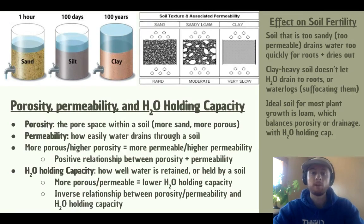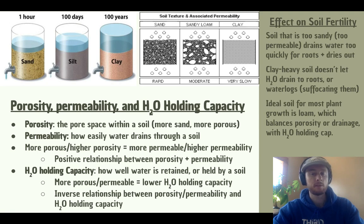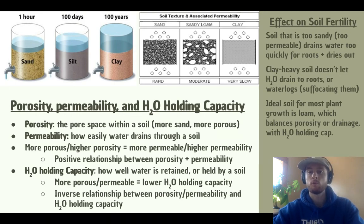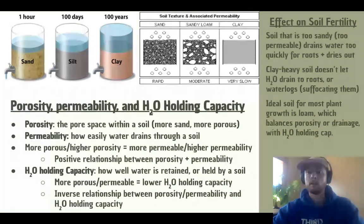What does this mean for plants? Plants need a balance between permeability and water holding capacity. They need some degree of porosity so that oxygen and water can enter the soil and reach their roots. But if the soil is too sandy or too porous, it has really high permeability and water drains straight through before the roots can access it. If the soil is too clay-dominated, then it doesn't drain water at all, and the roots either won't get access because water can't penetrate, or the water will stay there and suffocate the plant's roots by cutting off oxygen. The ideal state for plants is a nice balance between the permeability that comes with sand and the water holding capacity that comes with clay — and that's loam, roughly a 40-40-20 mix of sand, silt, and clay.